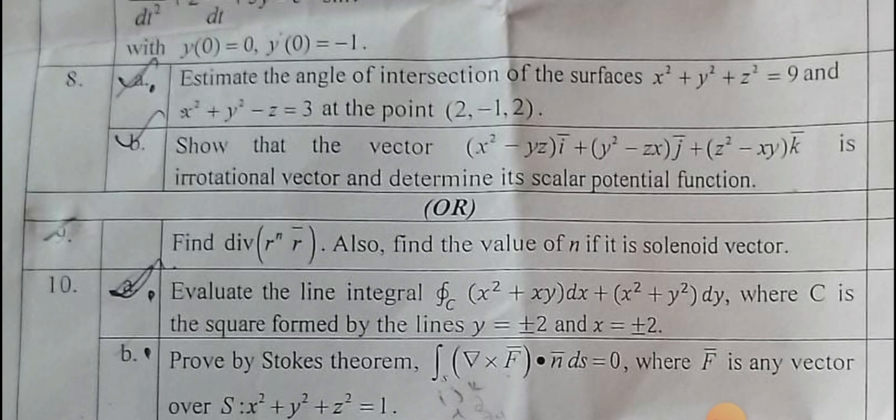Find divergence of r^n times r̄. You are calculating ∇·(r^n·r̄) where r̄ is a positional vector and finding that particular value. Asking to calculate n value if it is solenoidal. Solenoidal means its divergence value equals zero. From that, you can calculate the n value.